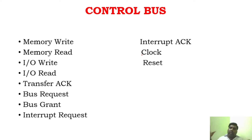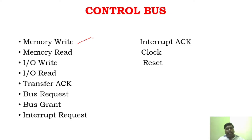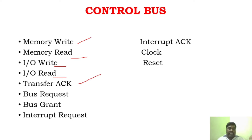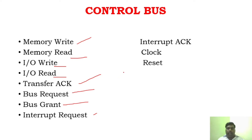You can see the numerous operations carried out by the control bus through its control lines. These include memory write operation, memory read operation, input-output read and write operations, transfer ACK, bus request, bus grant, interrupt request, and interrupt ACK. All these control signals are carried out by the control bus, making all these buses very, very important.